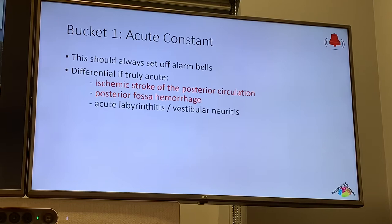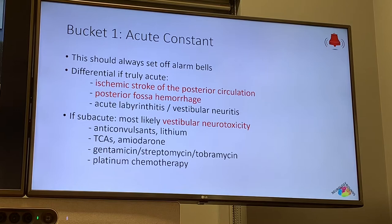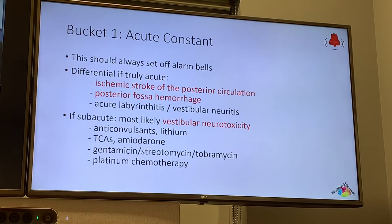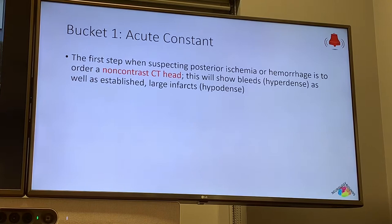If a patient says it's been more like a few days or a week or two but has been constant since — that's subacute constant and is fairly specific for vestibular neurotoxicity. These patients are vertiginous due to a medication they started. Common culprits include anticonvulsants, lithium, tricyclics, and aminoglycoside antibiotics — so if someone had a bacterial illness and was given antibiotics, pay close attention to those.